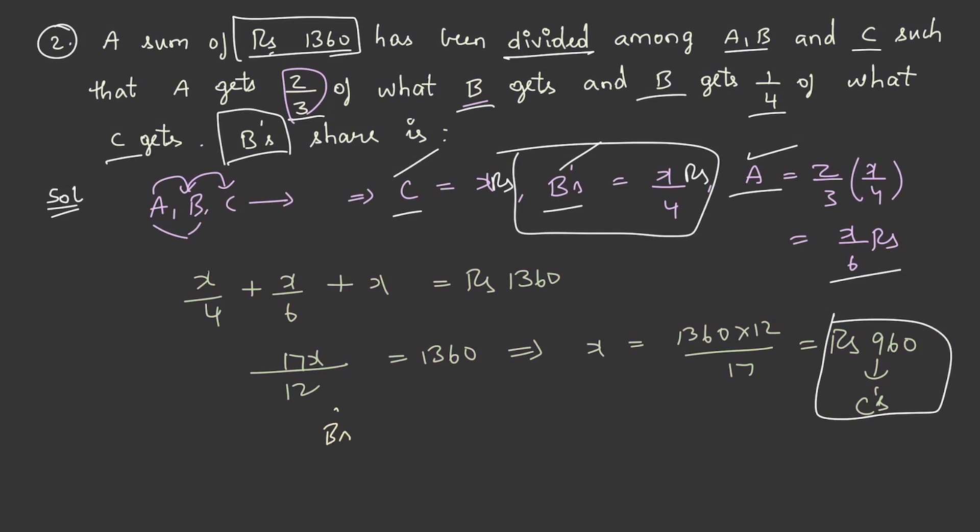What is asking us to find out B share, that is x by 4. Therefore, B share is equal to 960 by 4 rupees, which is equal to rupees 240.